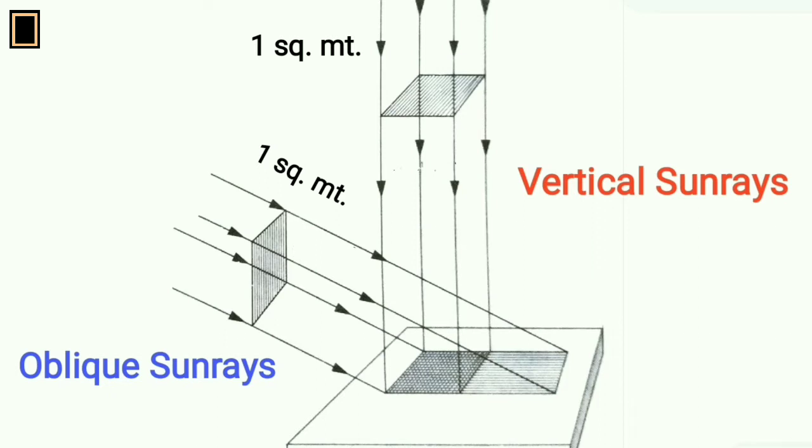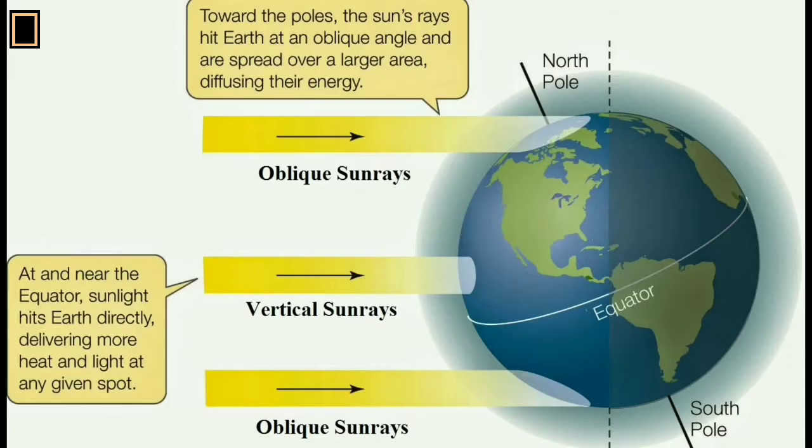Oblique sun rays incident over a vast area of the earth's surface and cause low temperature on that region. Low latitudinal region has vertical sun rays. At and near the equator, sunlight hits earth directly, delivering more heat and light at any given spot.